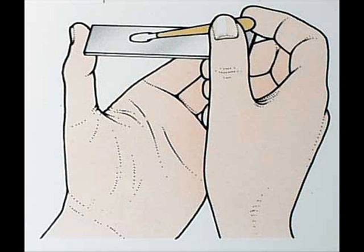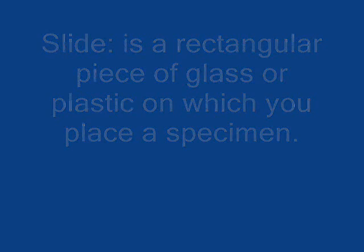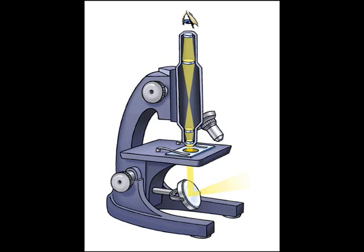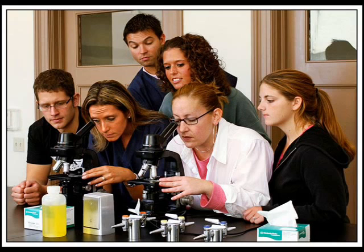Moving quickly, Miss Smith swabbed the gum and rubbed it on a slide. A slide is a rectangular piece of glass or plastic on which you place a specimen. She then put the slide under a microscope, which is an optical instrument that uses a combination of lenses to produce magnified images of very small objects.